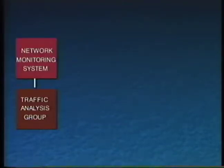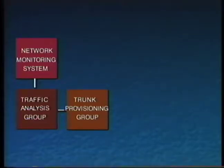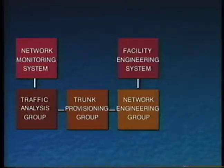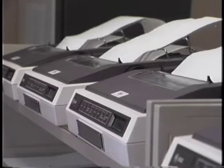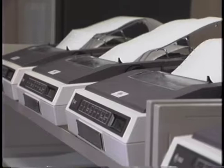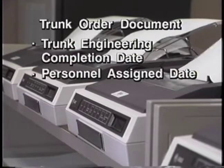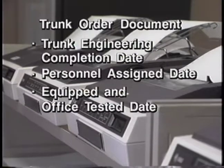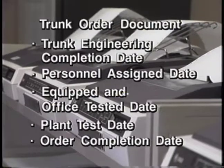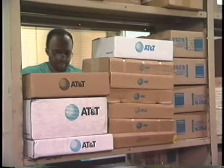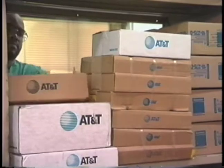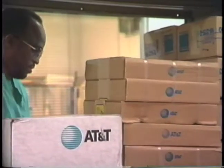To recap the provisioning process: the traffic analysis group used data from the network monitoring system, identified a problem, and sent their plan to the trunk provisioning group, which generated a trunk order. The trunk order was passed to the network engineering group, which employed a facility engineering system that automatically designed and reserved the necessary facilities. The facility engineering system produced a trunk order document specifying the facilities on which the new trunks would reside, and scheduled the provisioning effort by defining the trunk engineering completion date, personnel assigned date, equipped and office tested date, plant test date, and order completion date.